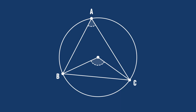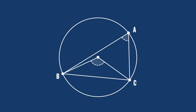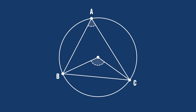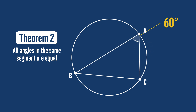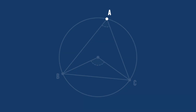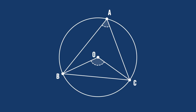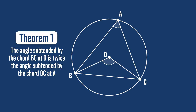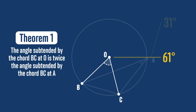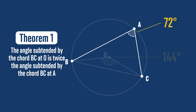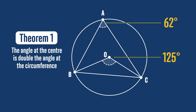Since it can't matter where the point A is on the circle, the angle at the circumference will be half of the angle at the centre wherever it is. So if we forget about the angle at the centre, we get the theorem that says all angles subtended by the chord BC in the same segment are equal. Subtended is just a formal way of describing an angle. The theorem could be stated as: the angle subtended by chord BC at O is twice the angle subtended by chord BC at A, but most people just say the angle at the centre is double the angle at the circumference.